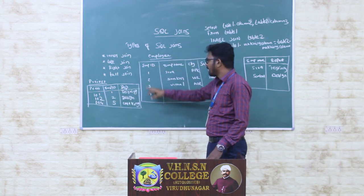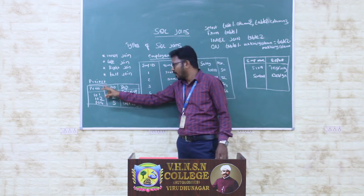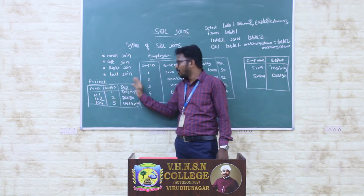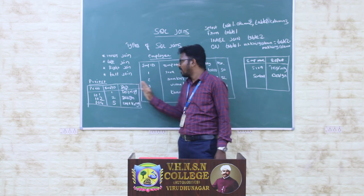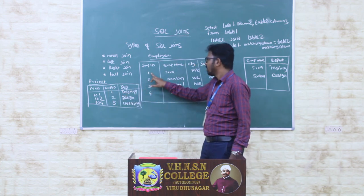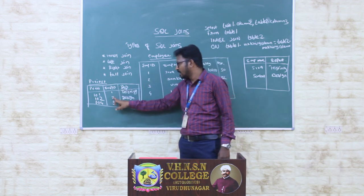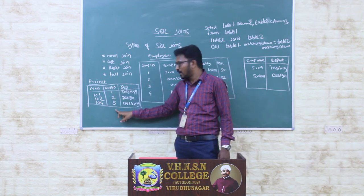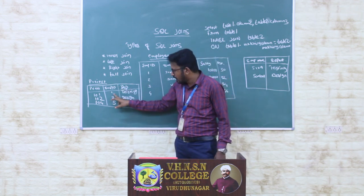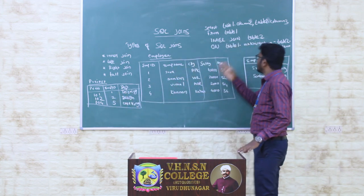In the employee table, the Employee ID and in the project table, the second column Employee ID are matching. So we look at the matched data — what entries are matched in these two tables? Employee IDs 1 and 2 are available in the project table. Yes, they are available. So IDs 1 and 2 are the only matched records.